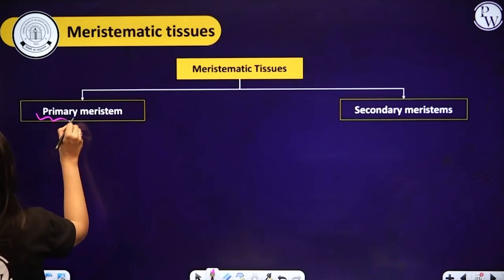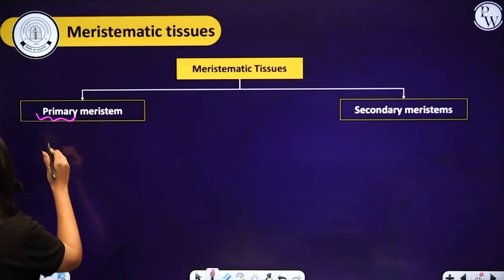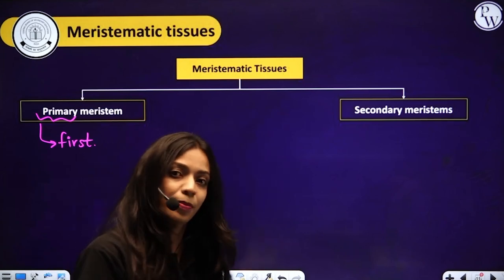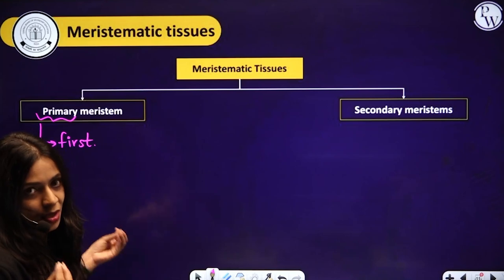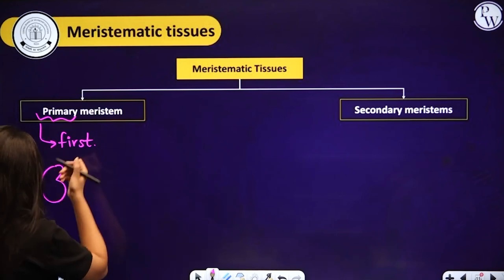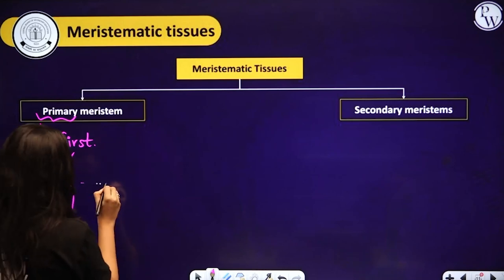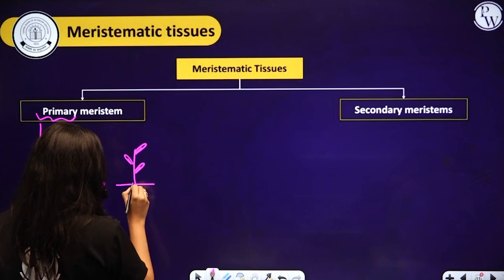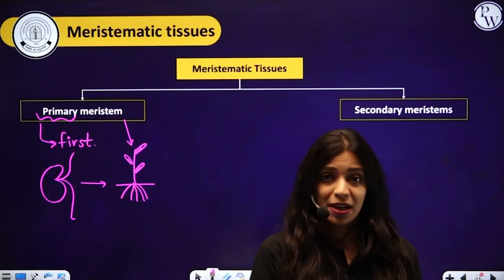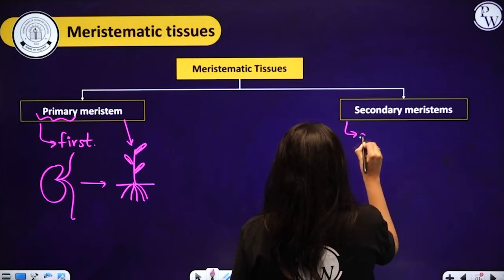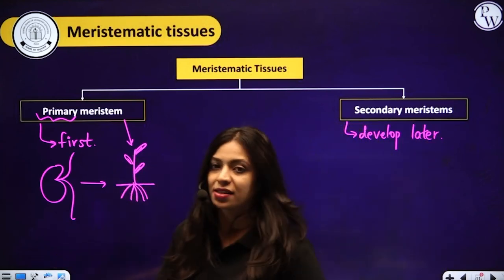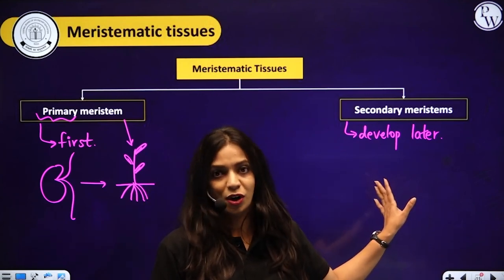Primary meristems are present in the plant body since the beginning — from the time the plant germinated from seed, the primary meristem has been present. Secondary meristems develop later in the life of the plant — they are not present from when the plant germinated. How exactly they develop will be explained next.